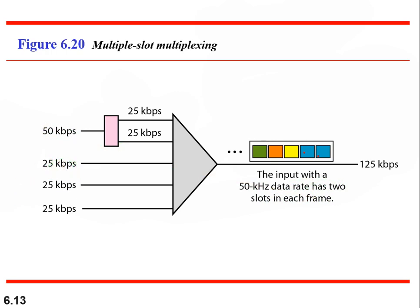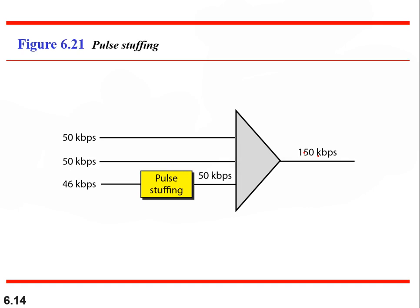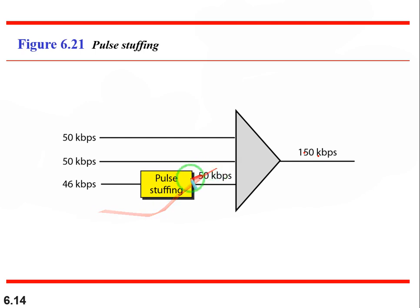For pulse stuffing: we have three links — 50 kbps, 50 kbps, and 46 kbps. Since 46 is less than 50, we add some bits to bring it up to 50 kbps. This is called pulse stuffing — adding bits to a link. Once 46 kbps becomes 50 kbps, it goes into the MUX, which combines all low-rate channels and transfers the data into one high-rate channel. This is bit insertion.